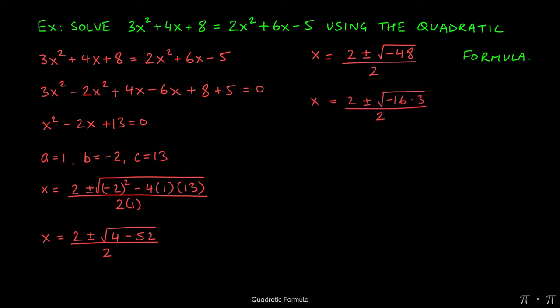In order to find the square root of negative 48, we can split it up into negative 16 times 3. The square root of negative 16 will be 4i. Remember that the square root of negative 1 is i, and the square root of 16 will give us the 4. The square root of 3 remains as is because we can't find it. All of this is still being divided by the 2.